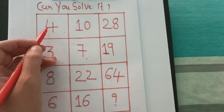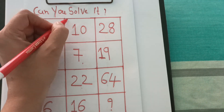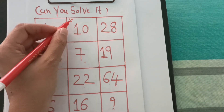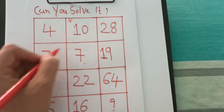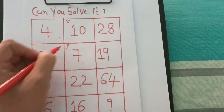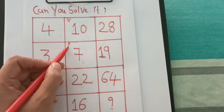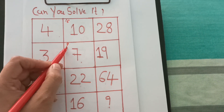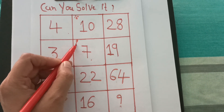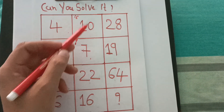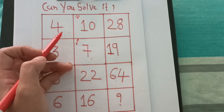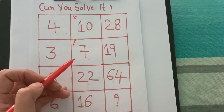Here 4 square is 16 and the difference is 6. But here 3 square is 9 and the difference is 2. So that is not possible. Square is not possible. And cube is also not possible because the difference is huge.